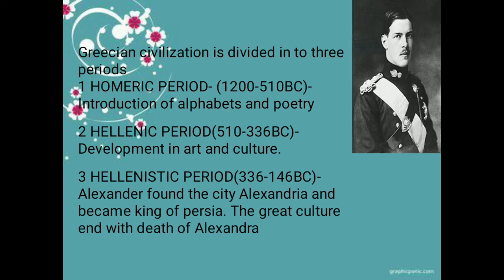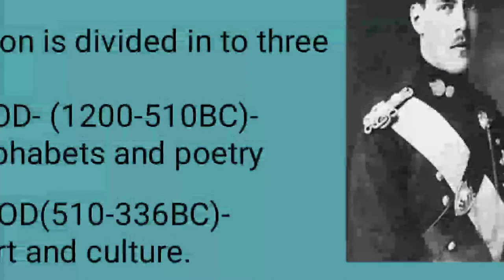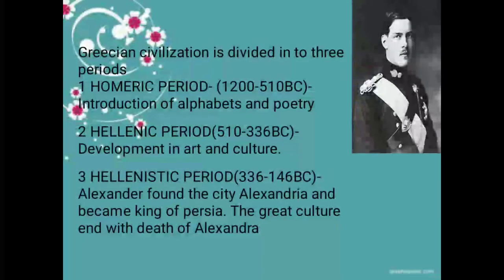In the Homeric period, alphabets and poetry were introduced. In the Hellenic period, major art and culture developed. In the Hellenistic period, from 336 to 146 BC, Alexander founded the city of Alexandria and became the king of Persia. The great culture developed in the Homeric and Hellenic periods was later destroyed with the death of Alexander.